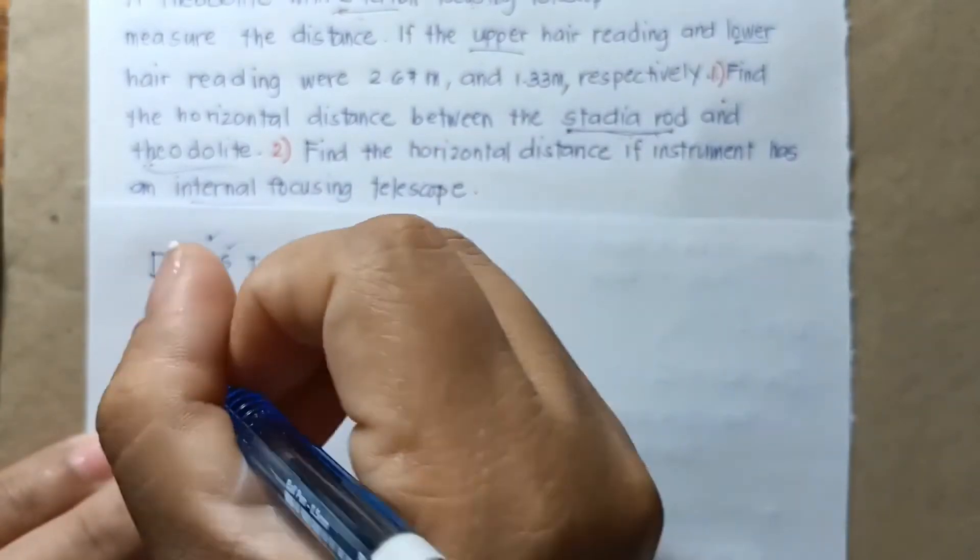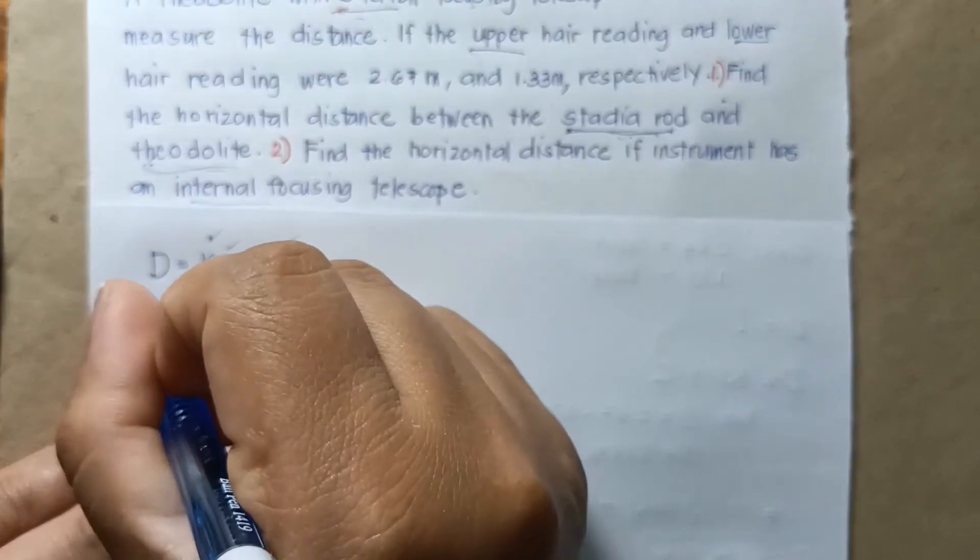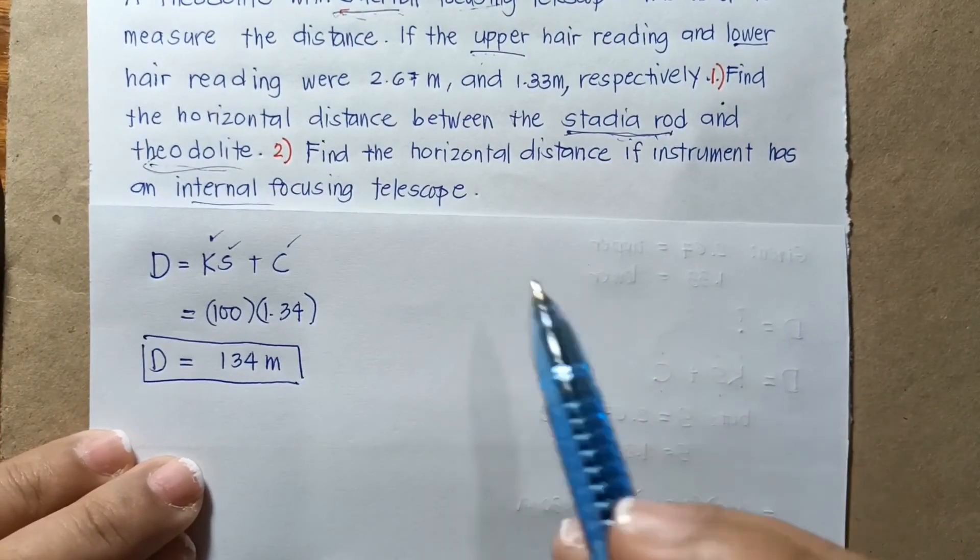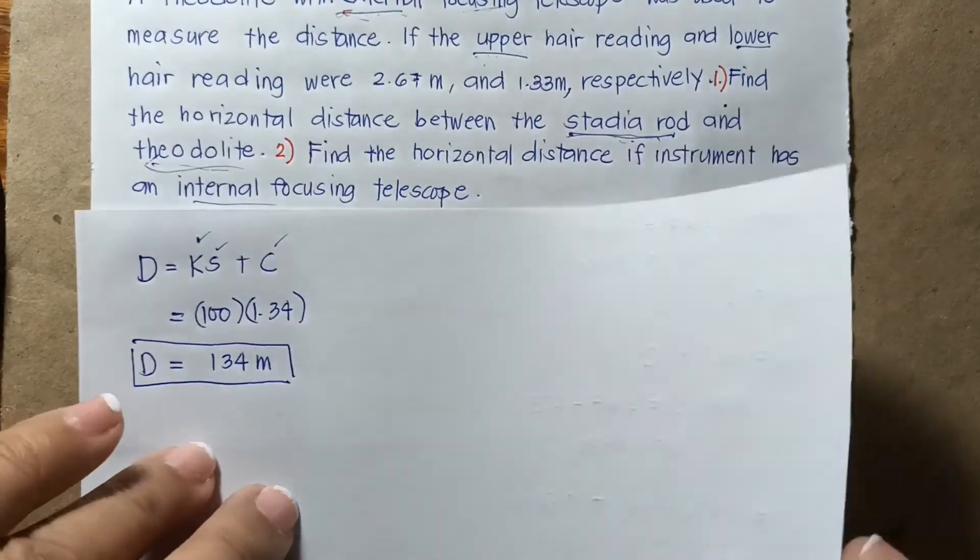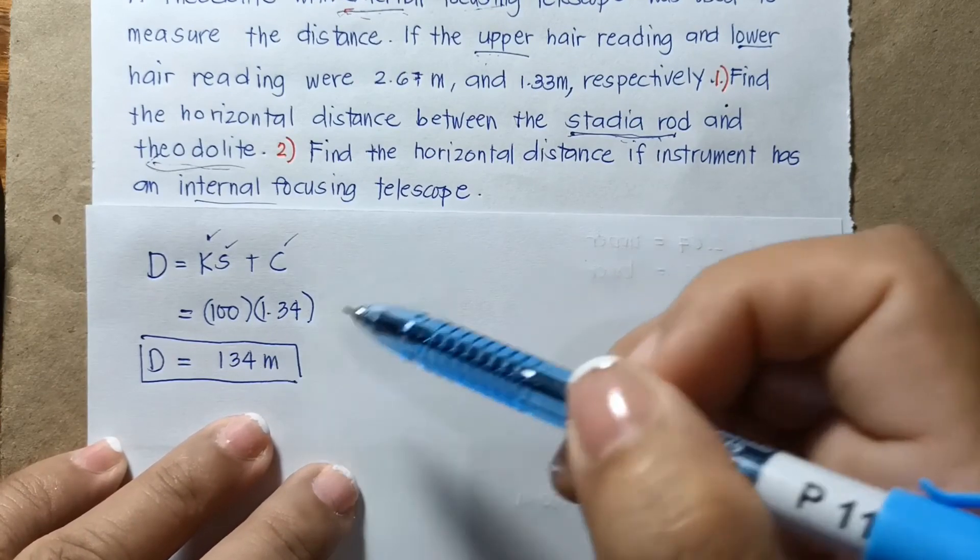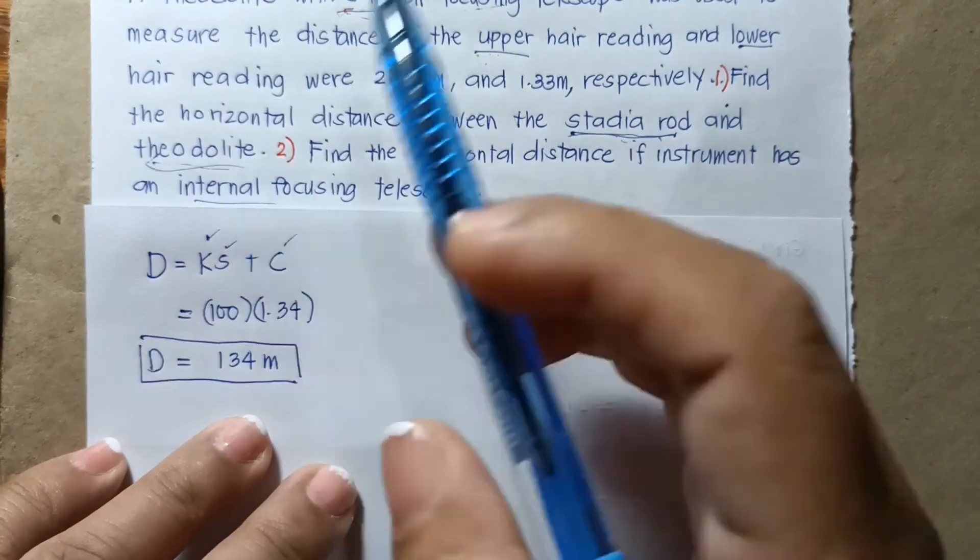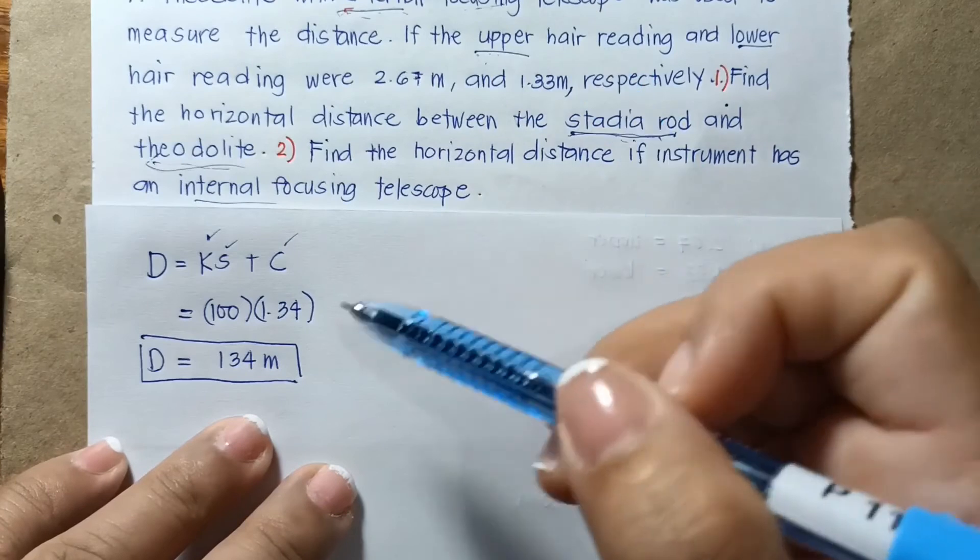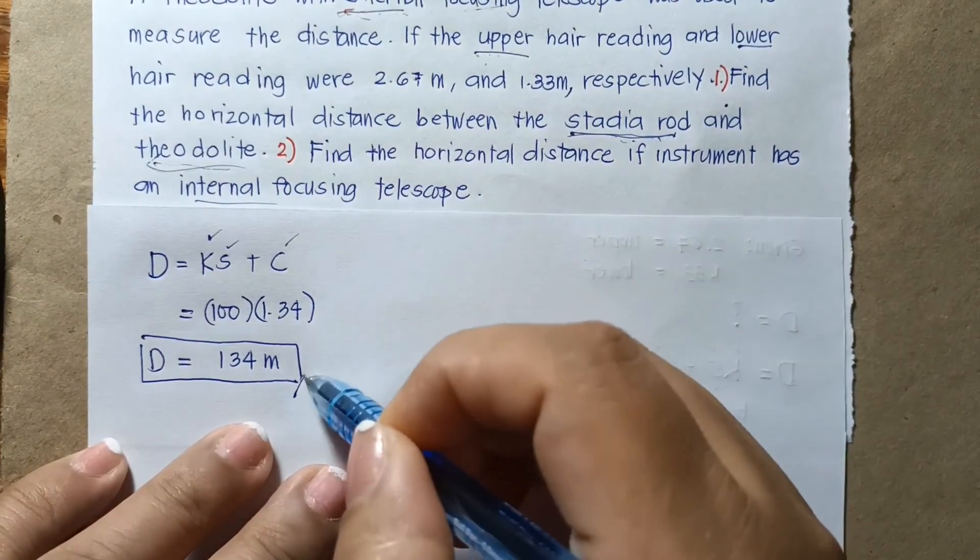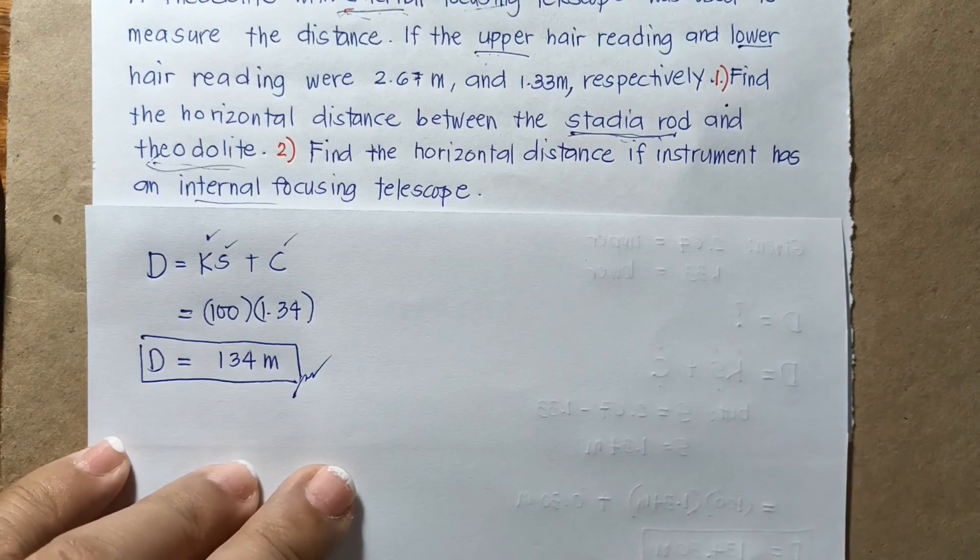So this is the distance between the theodolite and the stadia rod. So notice that if you use external, this is longer by 0.3. So the distance between the stadia rod and theodolite for external focusing telescope is longer by 0.3 meters. So it's around one ruler, so not that much, but it will affect also your accuracy.